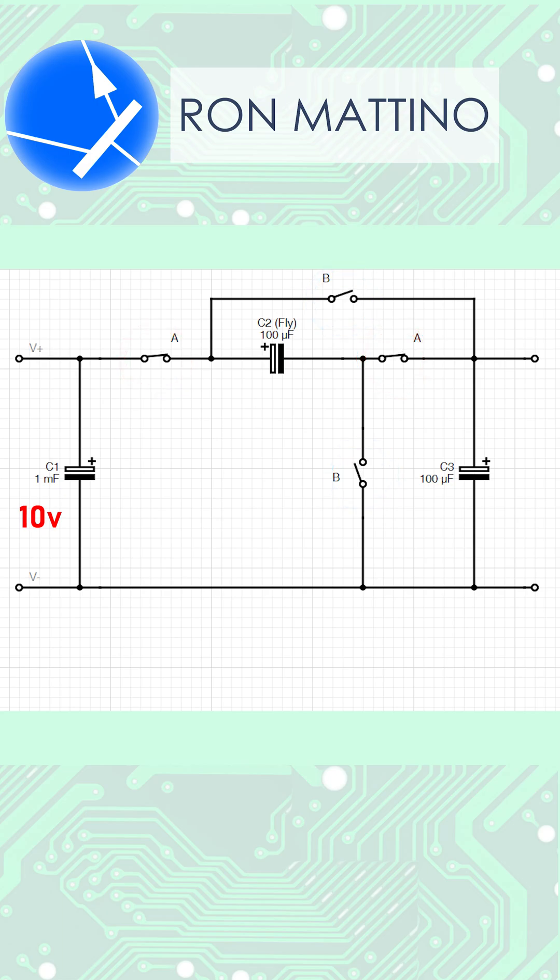Whilst in phase A, current follows this path, which means C2 and C3 are basically connected in series. As their capacitance is the same, they are charged to half the supply voltage each. So we got 5V here and here.